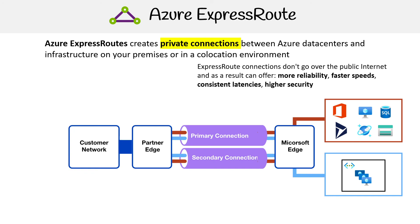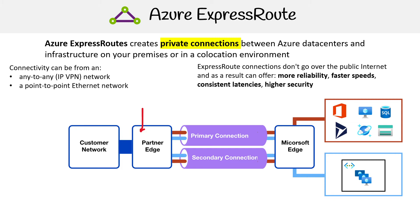Here's a graphic representing what's going on. The idea is that you have connectivity from different things like any-to-any — so that's an IP VPN network, a point-to-point Ethernet network, or a virtual cross connection — and this all goes through a connectivity provider at a co-location facility, such as an edge partner. You would be the customer network connecting your on-premise environment all the way to your Azure services.